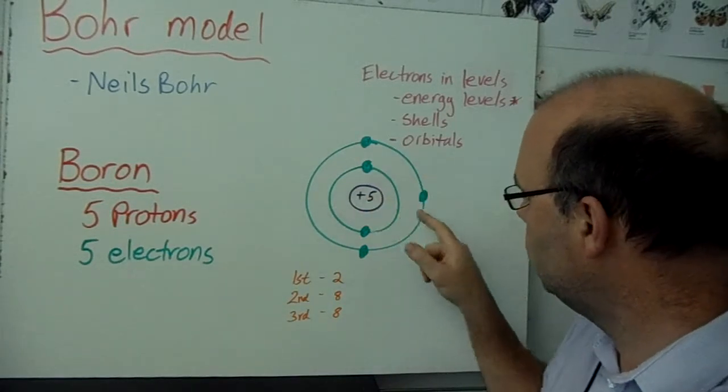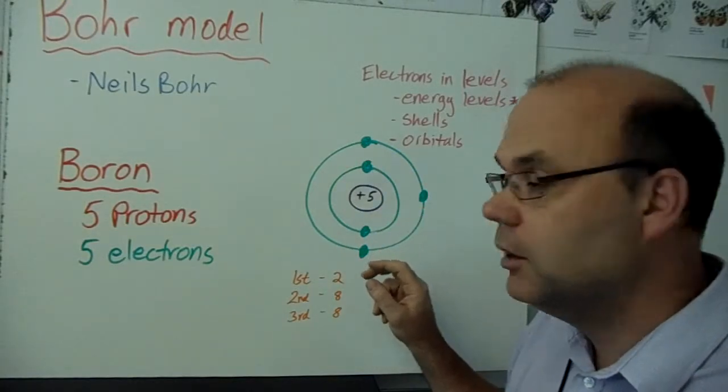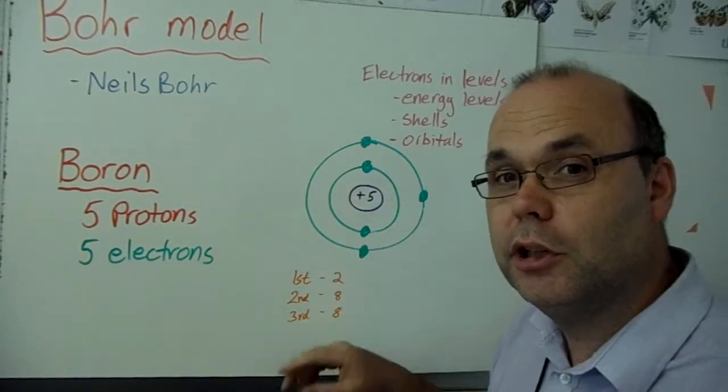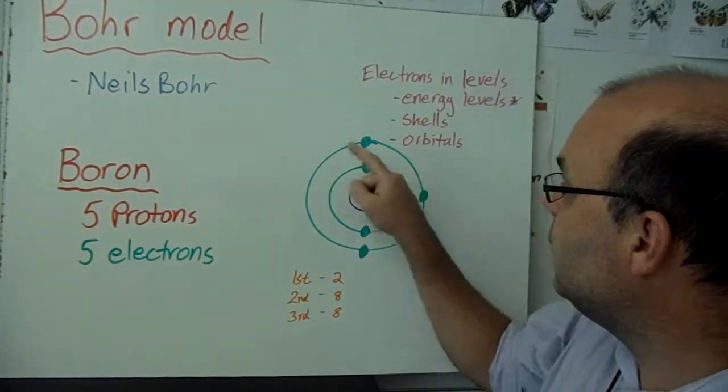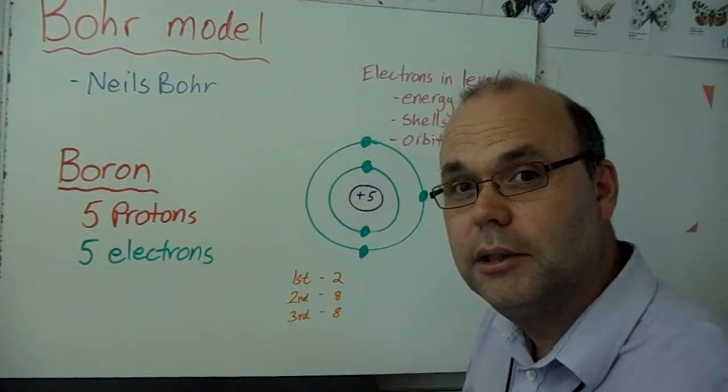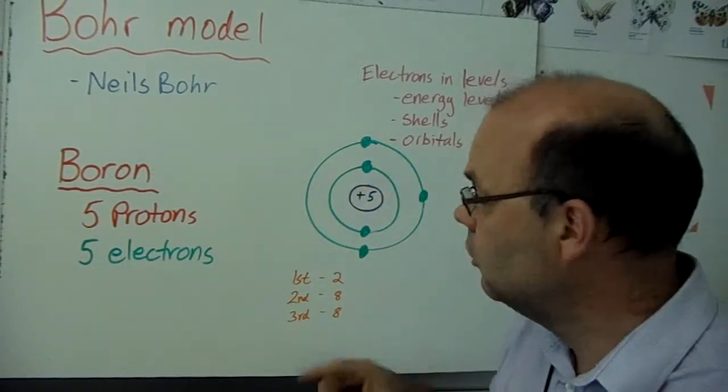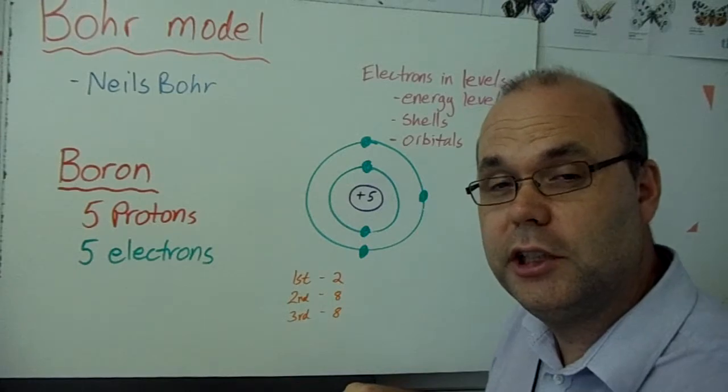Two in the first. Three in the next. And that's going to be important coming up because it's how many electrons are in that outside energy level or energy shell. That's what controls what chemical reactions each atom has.